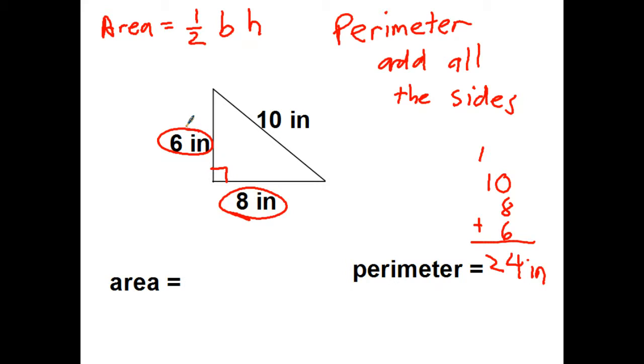So I need one-half times 8 times 6. I usually like to just take one of these if they're even, either the base or the height, and take it times a half right away. So I got one-half times 8. Well one-half of 8 equals 4. Then take 4 times the 6, 24 square inches.